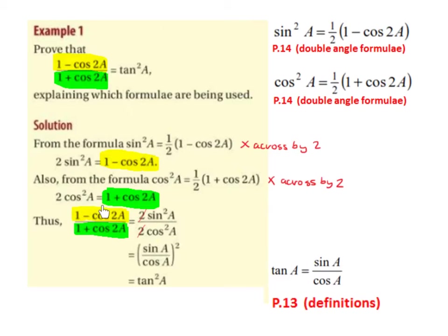So 1 minus cos of 2a is now equal to 2 sine squared a, and 1 plus cos of 2a is now equal to 2 cos squared a. We can cancel out the 2s, so we're left with sine squared a divided by cos squared a. We can bring the squares outside the bracket, so we have sine of a divided by cos of a, all squared. And we know from our definitions on page 13 of our formula tables that tan of a equals sine of a divided by cos of a, so we end up with tan squared a. And that's what we were asked to prove.